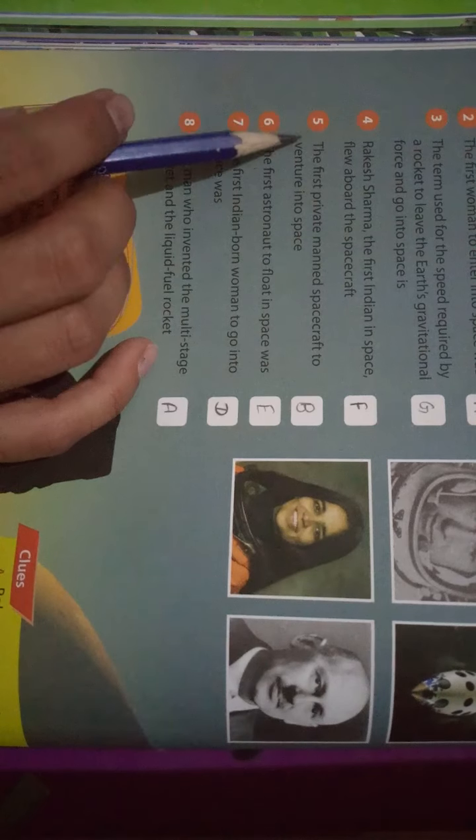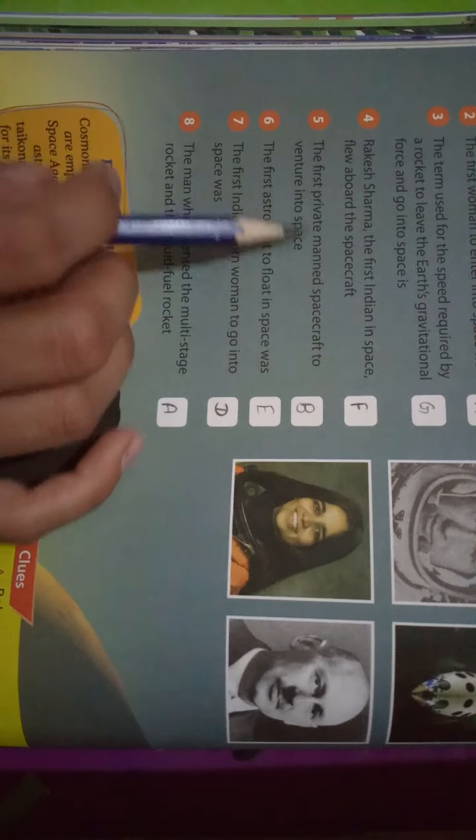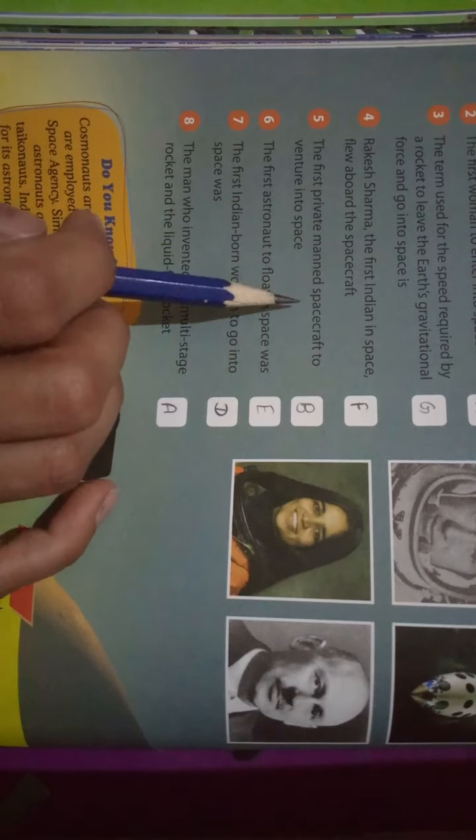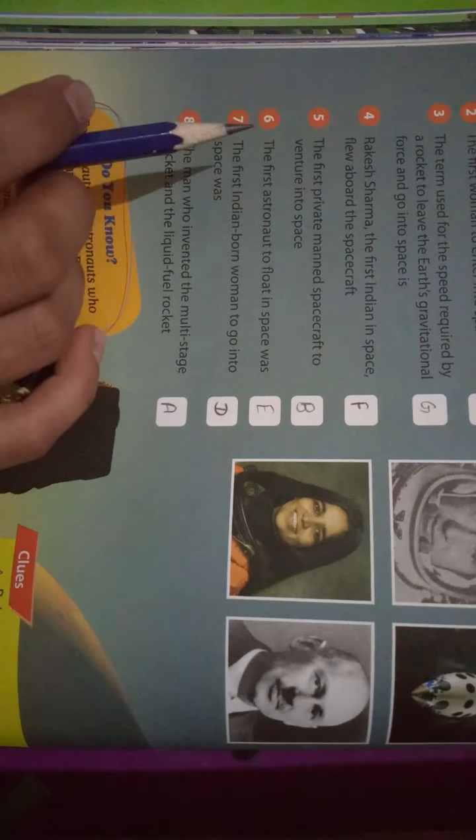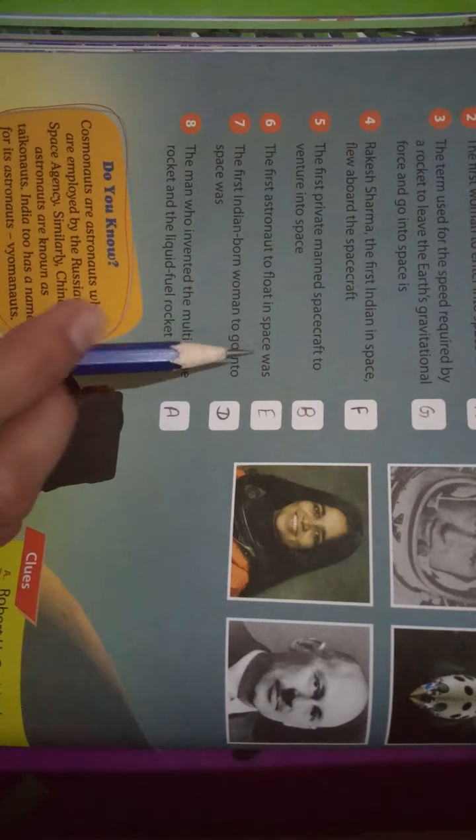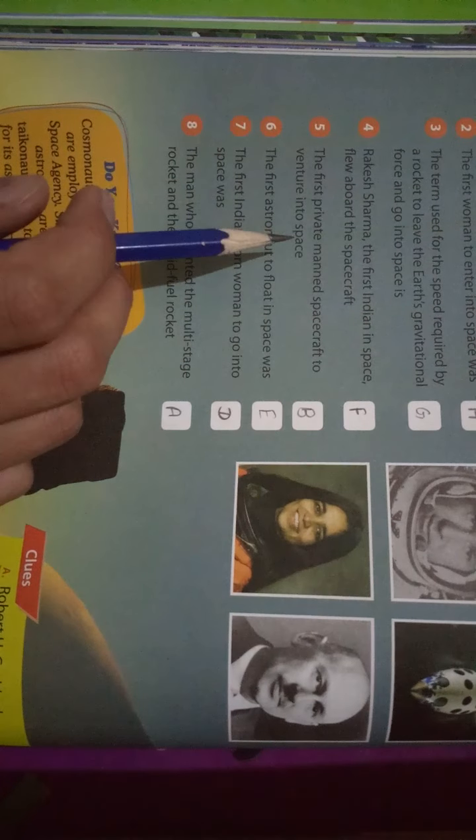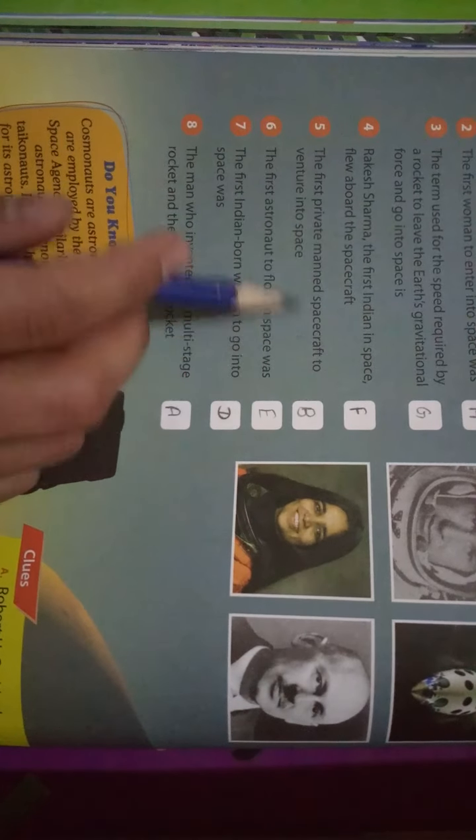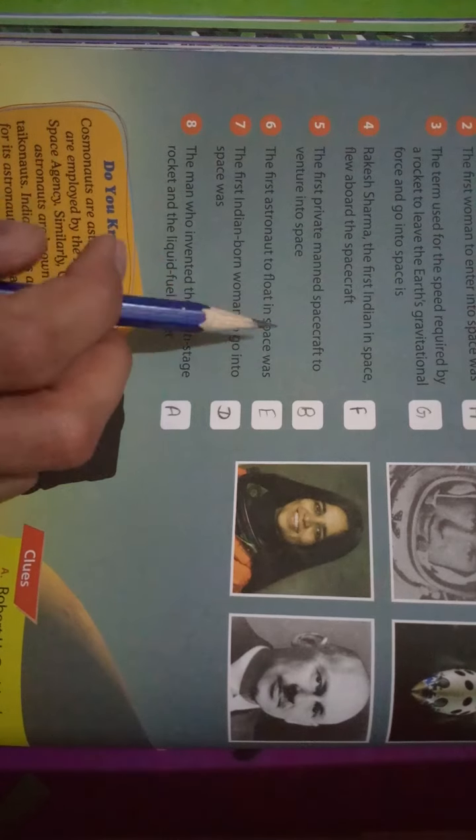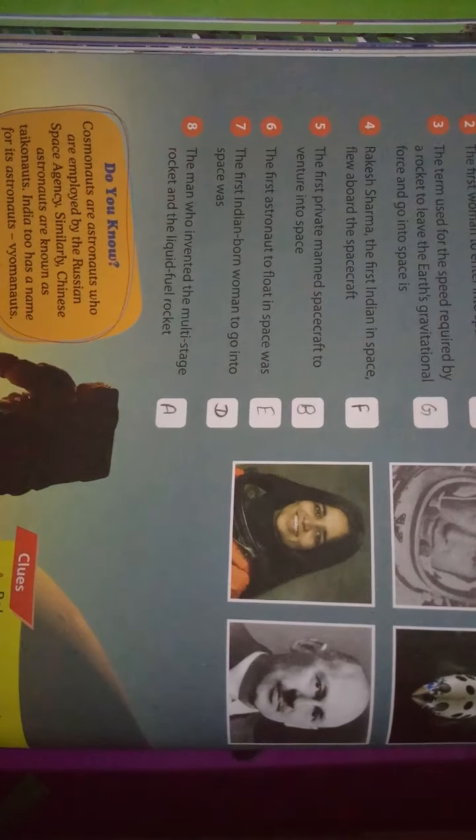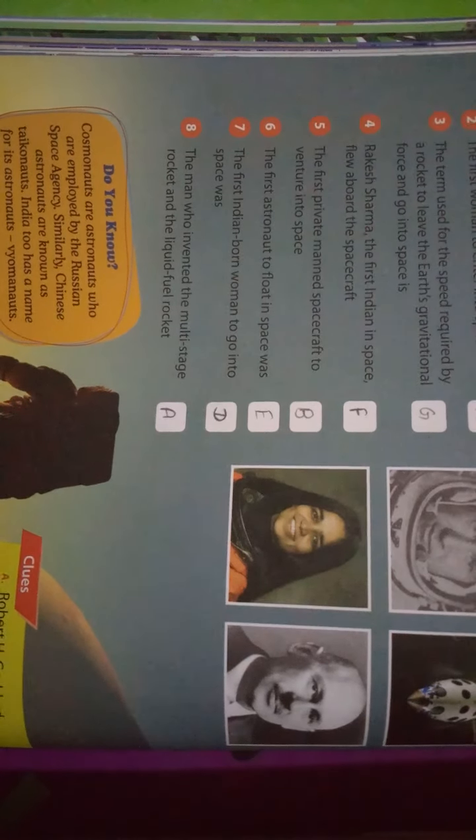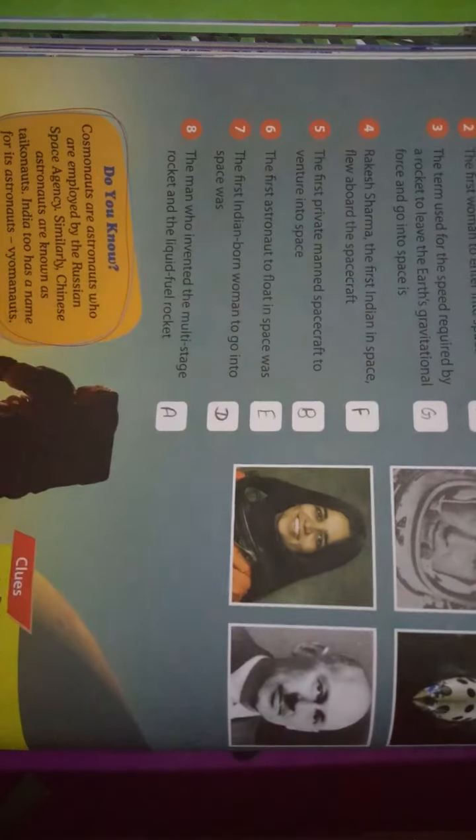Question number 5: The first privately managed spacecraft to venture into space. What was the first private spacecraft? Which was the 5th number? B, SpaceShipOne. The answer is B.